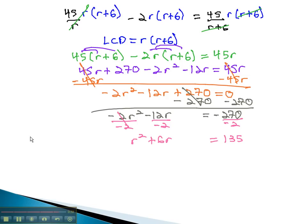To complete the square, we need c to be 1 half of b squared. Half of 6 is 3 squared is 9, and so we'll add 9 to both sides, to give us r plus 3 squared, equals 144.